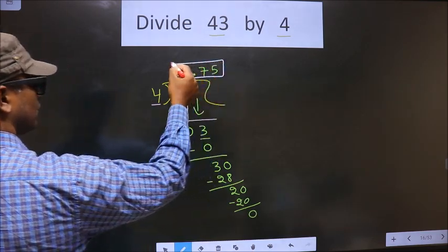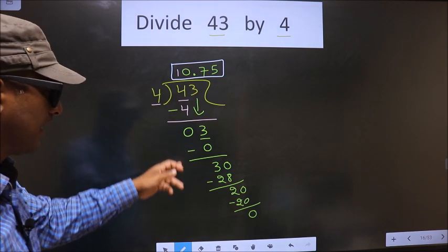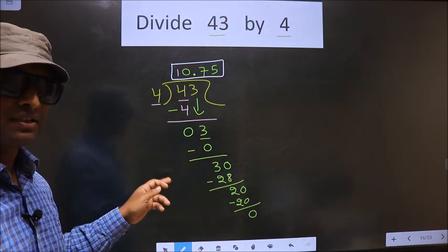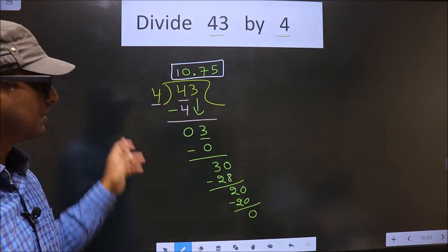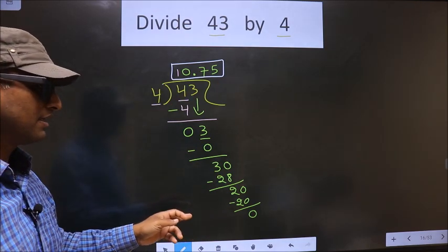This is our quotient. Did you understand where the mistake happens? You should not do that mistake. Am I clear?